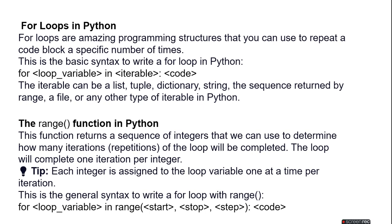And the range function in Python. This function returns a sequence of integers that we can use to determine how many iterations of the loop will be completed. The loop will complete one iteration per integer. Each integer is assigned to the loop variable one at a time per iteration. This is the general syntax to write a for loop with range.